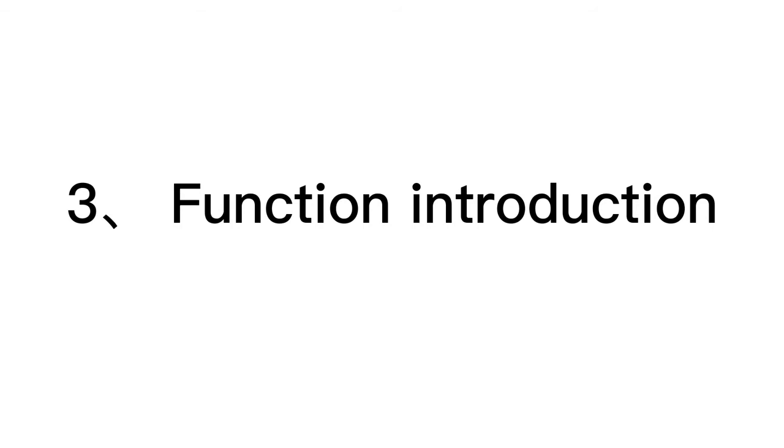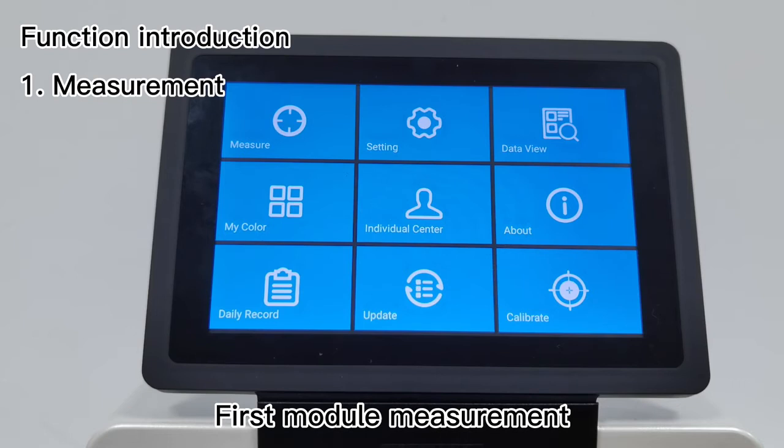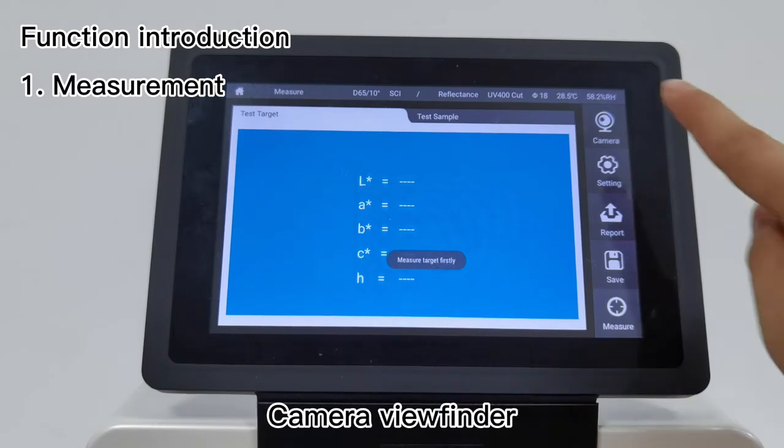Function Introduction: The instrument has 9 functional modules. First module is Measurement - all color measurements are operated in this module with camera view finder.